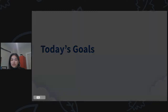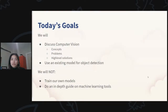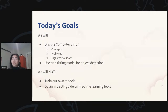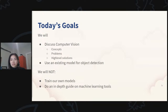Today's goals: we'll be discussing computer vision concepts, computer vision problems, and some high-level solutions to those problems. We will be using an existing model for object detection. But we will not be training our own models today, nor doing an in-depth guide on machine learning itself. The focus will mainly be on the computer vision problems and aspects of any machine learning problems.